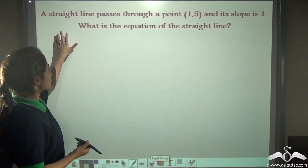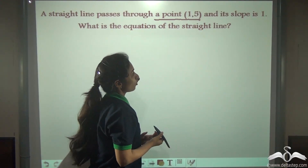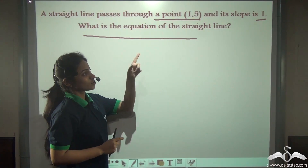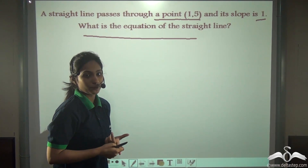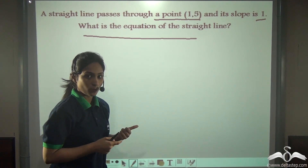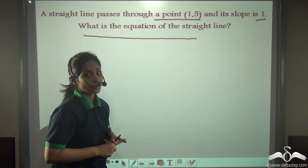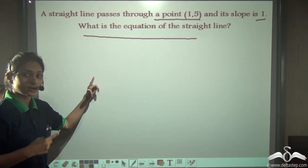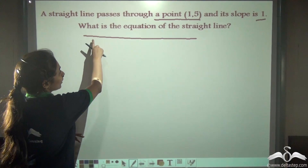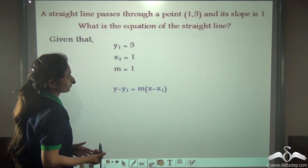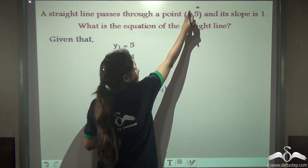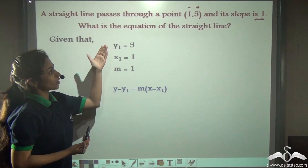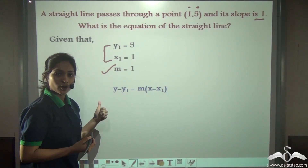Let us apply this in a problem. A straight line passes through a point and its slope is 1. What is the equation of the straight line? If a line has a slope of 1, tan theta equals 1, so tan theta equals tan 45, meaning theta is 45 degrees — but we do not require that information here. We come back to finding the equation of this straight line. Here y1 is 5, x1 is 1, and m is given as 1. Since we have a point and the slope, we will use the point slope form.